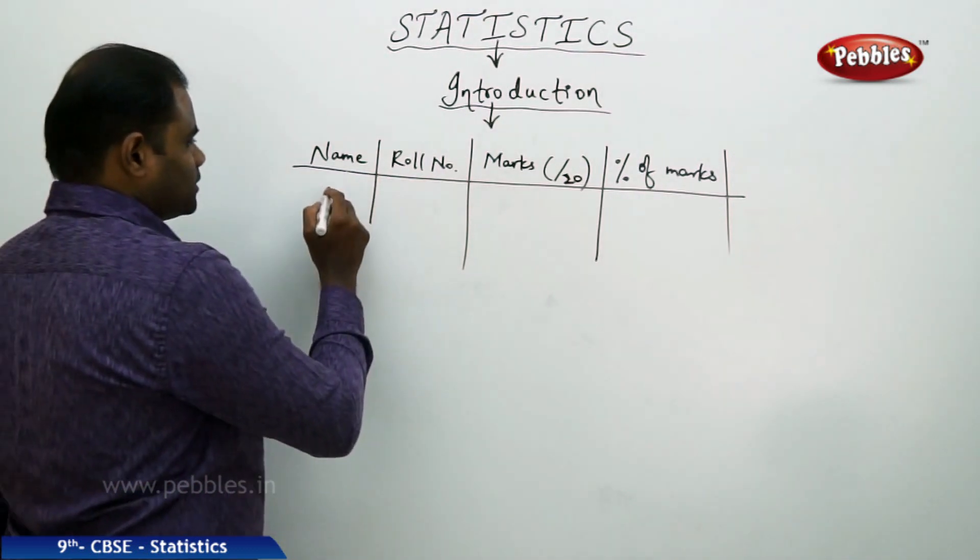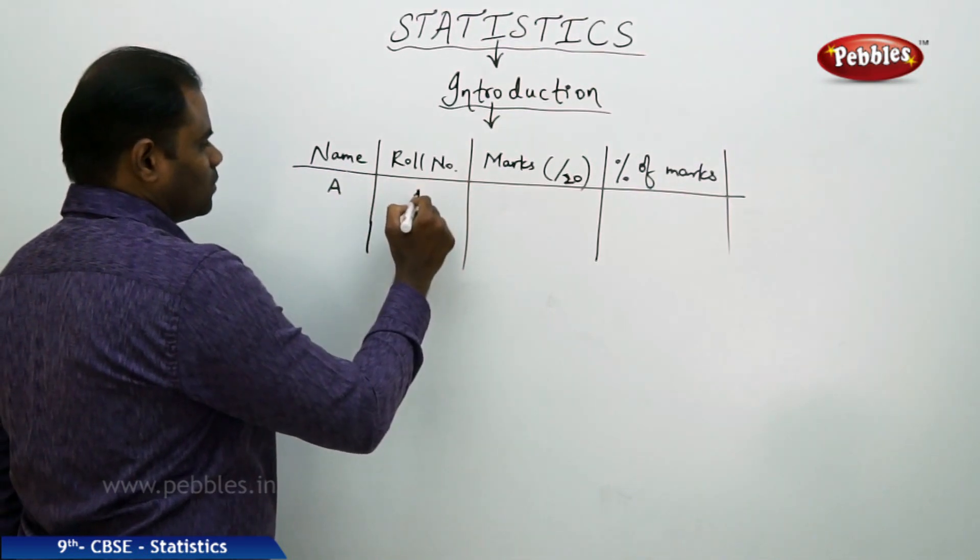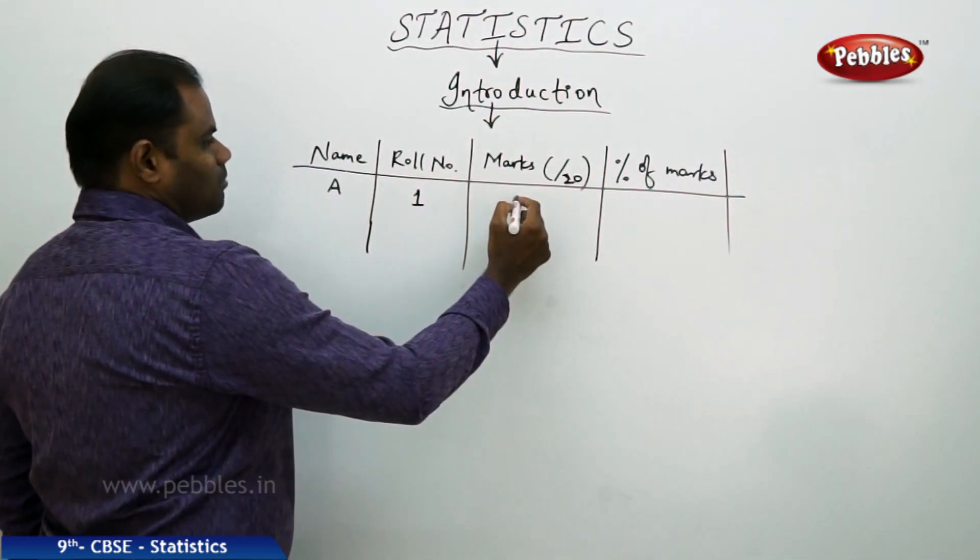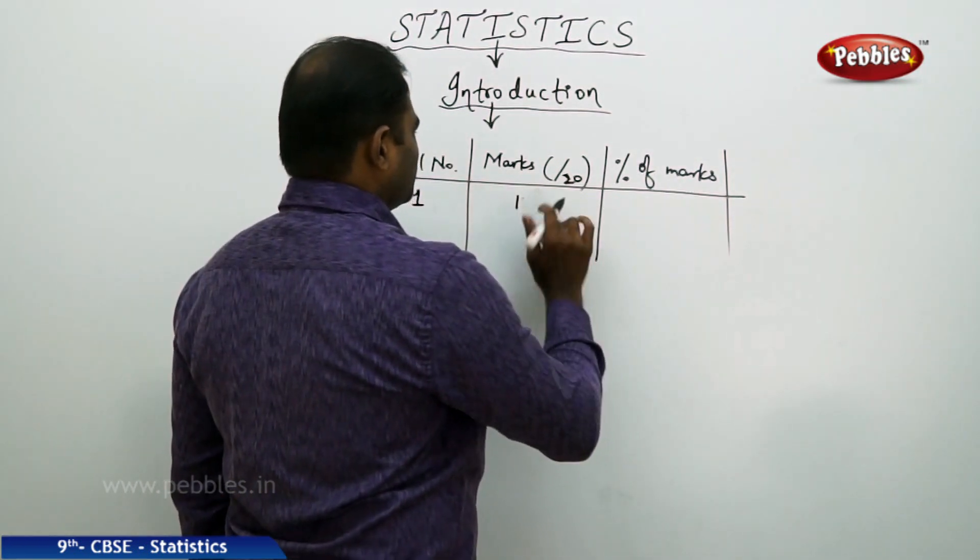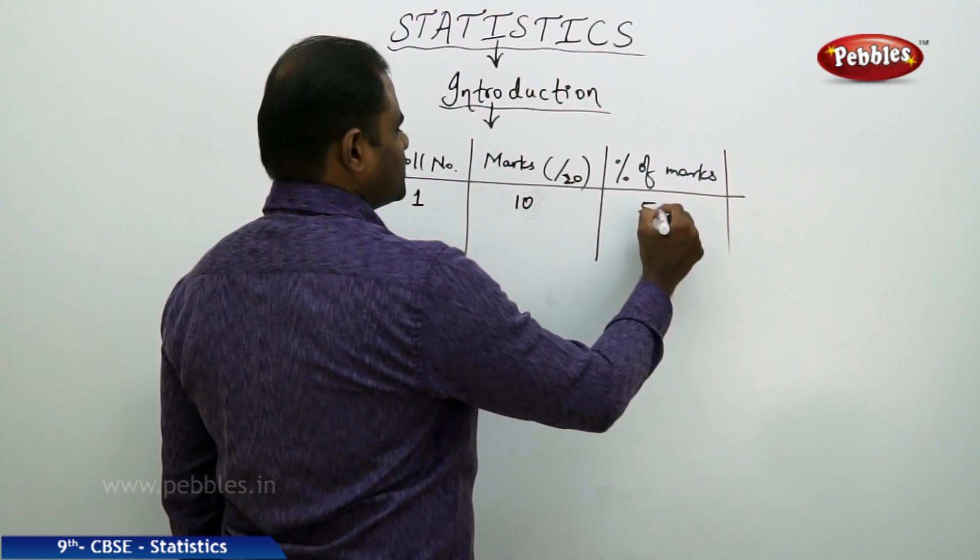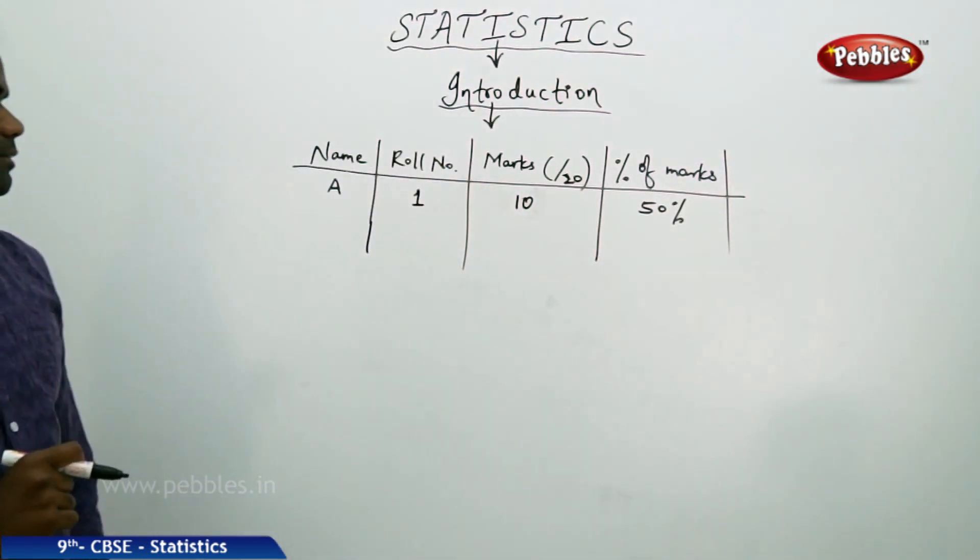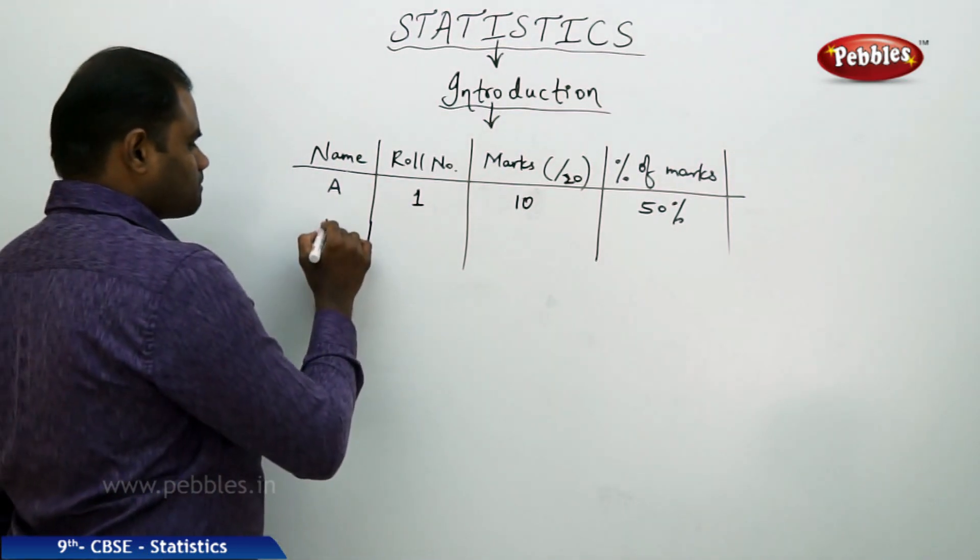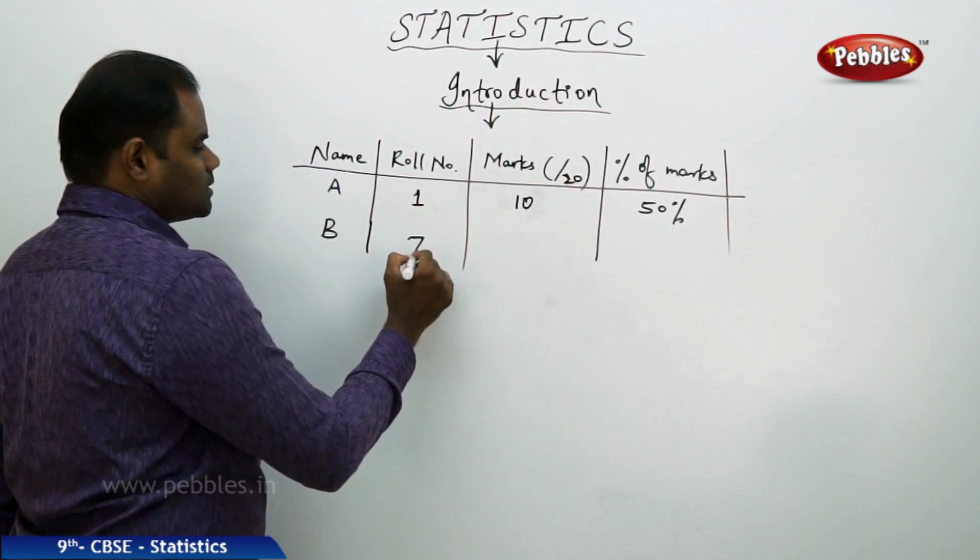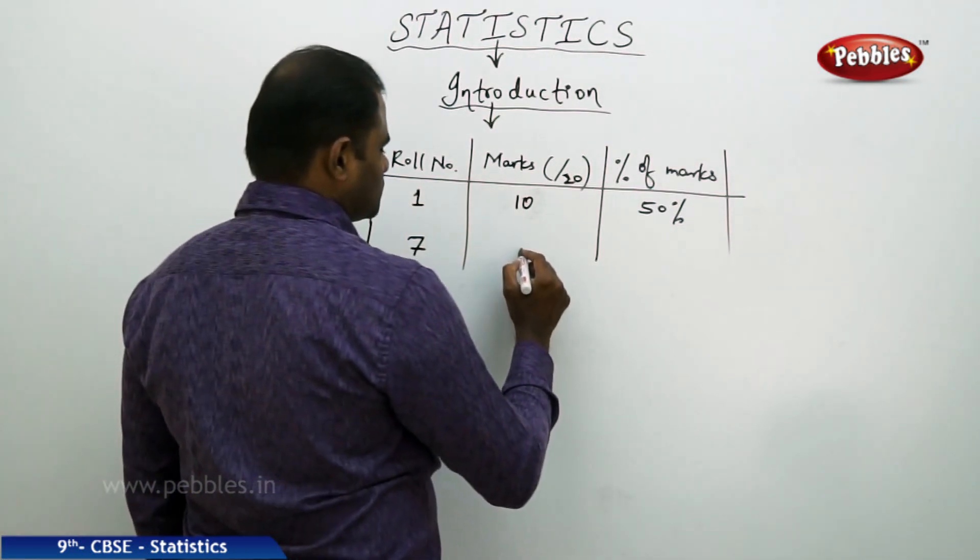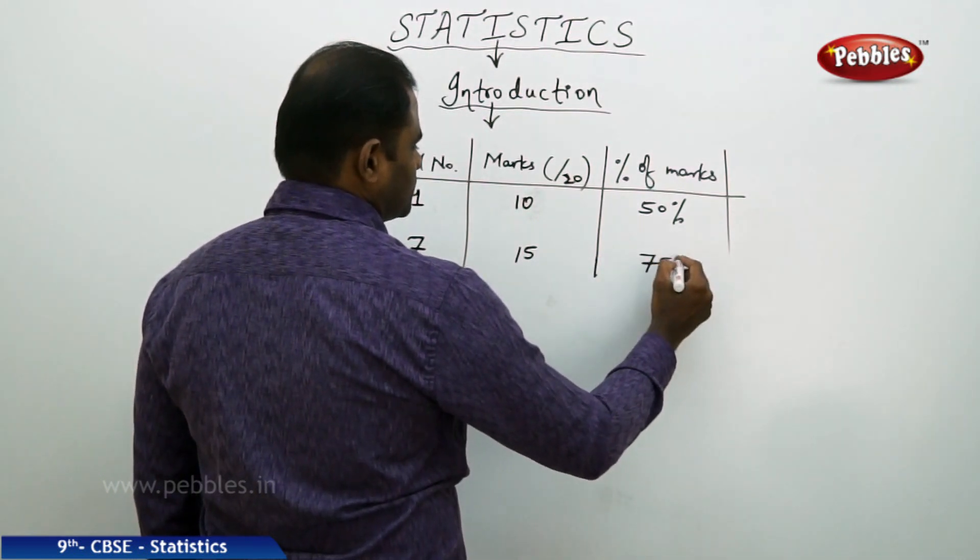Say a student with name A and roll number 1 has got 17 marks out of 20, and his percentage is 85%. Student B whose roll number is 7 has got 15 marks out of 20, and his percentage is 75%.